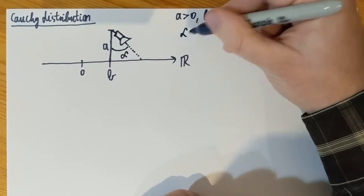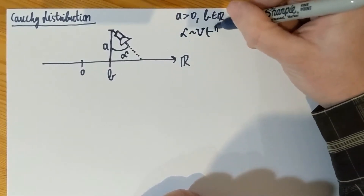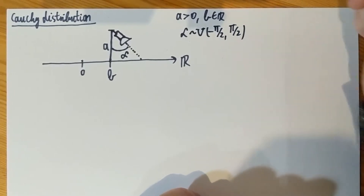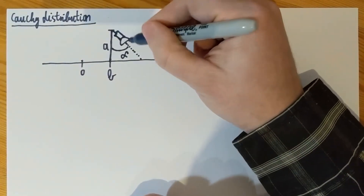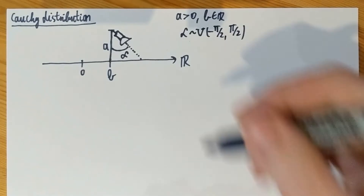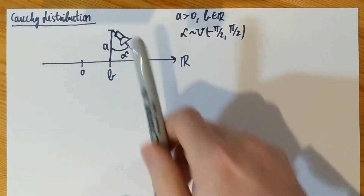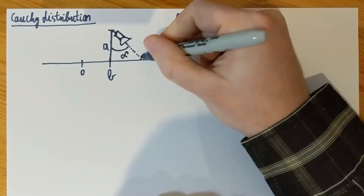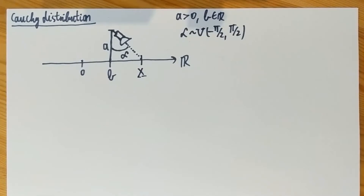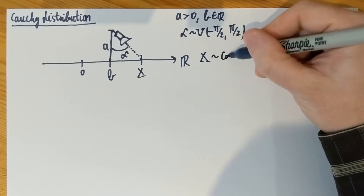Point the torch at a uniform random angle alpha from vertical. So let alpha be a uniform random variable between left horizontal, which is minus pi half, and right horizontal, which is positive pi half. When alpha is negative it goes left, when alpha is positive it goes right. Denote by X the point where the light beam touches the one-dimensional table. Then X is going to have the Cauchy distribution.